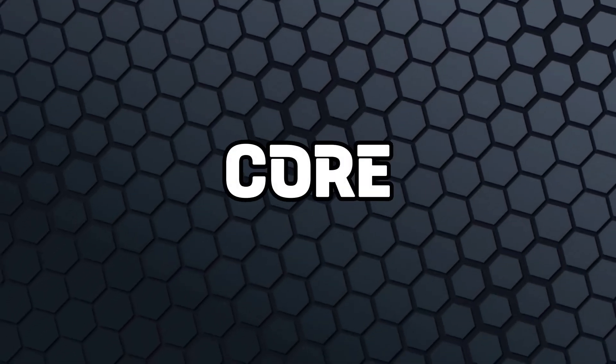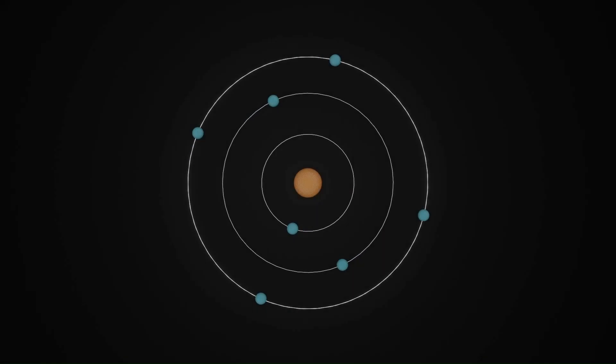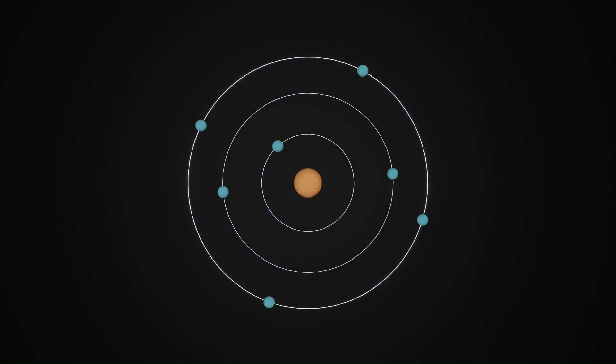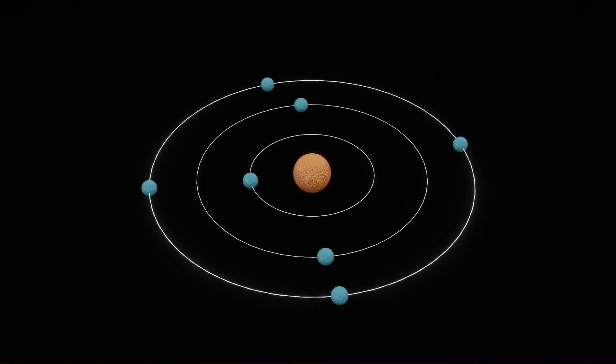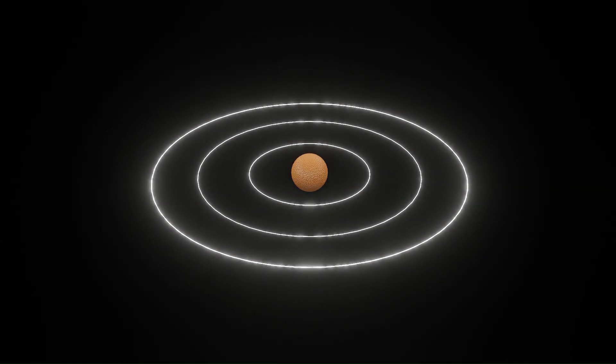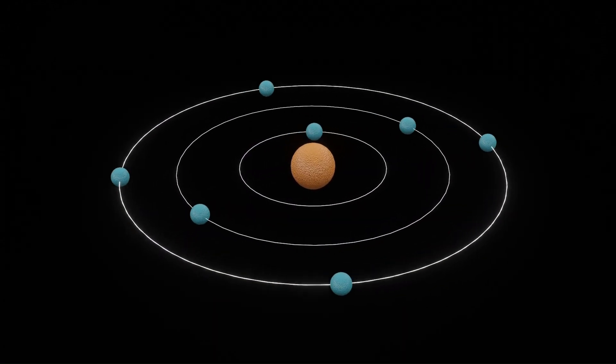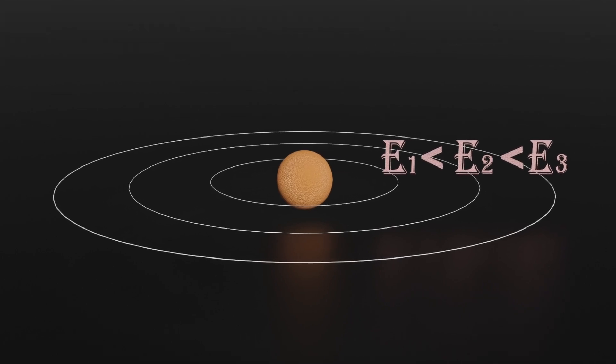Let's get into the core of Bohr's groundbreaking model. In 1913, the brilliant Danish physicist Niels Bohr proposed that electrons move in specific orbits around the nucleus, kind of like planets orbiting the sun. In Bohr's model, these orbits are called shells. Shells are not random—they are quantized, meaning only certain shells are allowed. The innermost shell has the lowest energy level, and as you move outward, the energy increases.